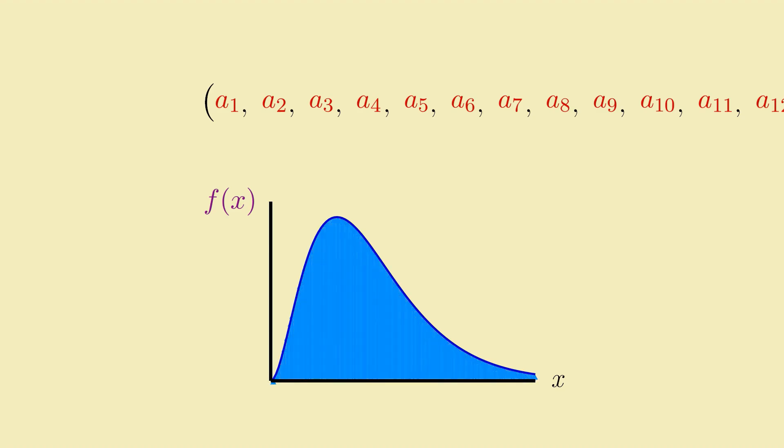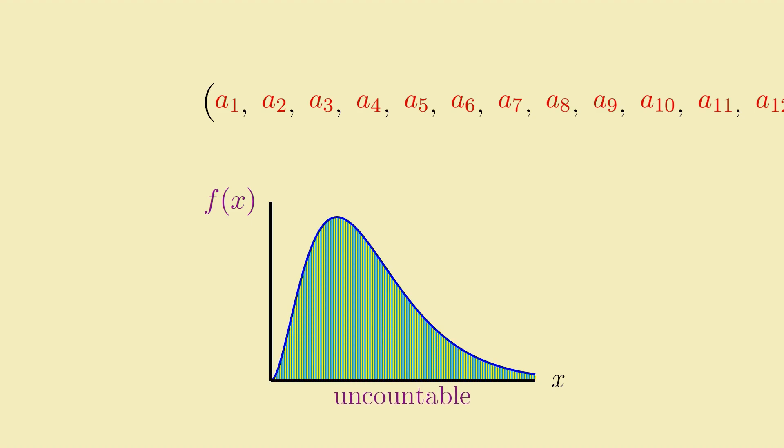Similarly, you can also view a function that takes real number inputs and outputs as a vector with infinitely many components, each component coming from plugging in a different real number to the function, or in other words, the y-coordinate of every x-y pair in the function's graph. The difference here is that since the real numbers are uncountable, a function defined over the real numbers has uncountably many possible inputs, meaning it has uncountably many components when viewed as a vector, whereas an infinite sequence only has countably infinitely many components.